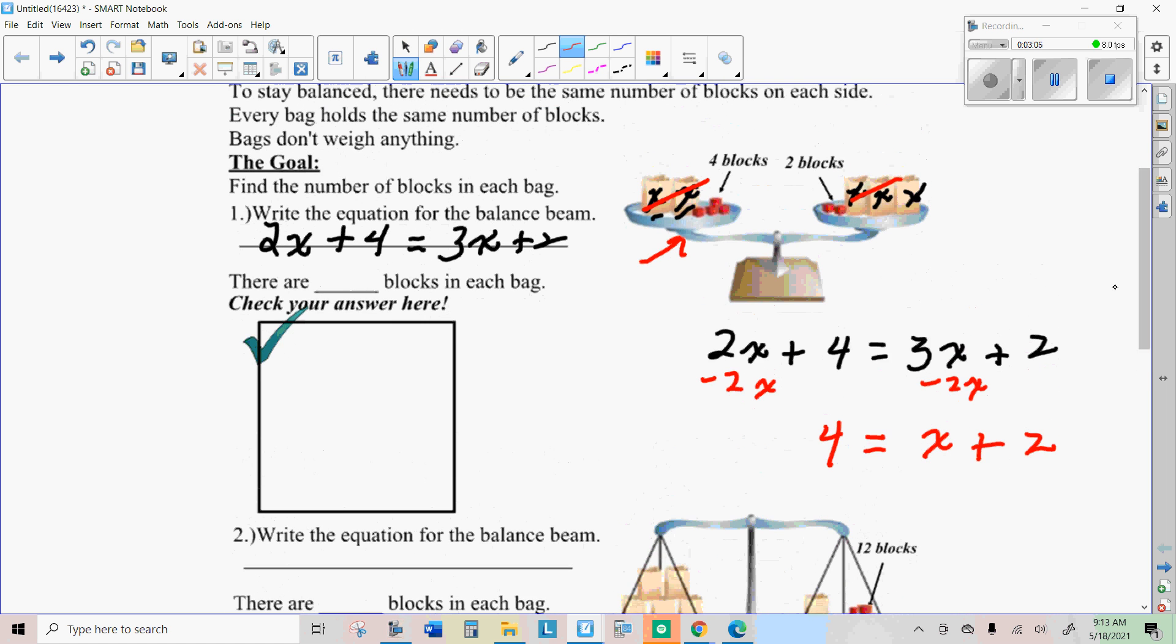Now, I'm going to do my next step. I'll do that with the blue. I'm going to take away those two blocks from there and these two blocks from here. The reason I did that is I wanted to be left with just one bag over here. So, what I did there is I got rid of these two and took away two from this side to keep it balanced. And then, I ended up with X equals two, which means this one bag weighs the same as these two blocks that are left over.